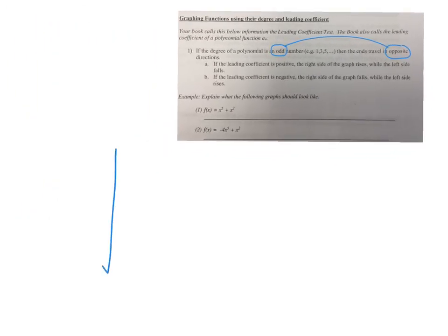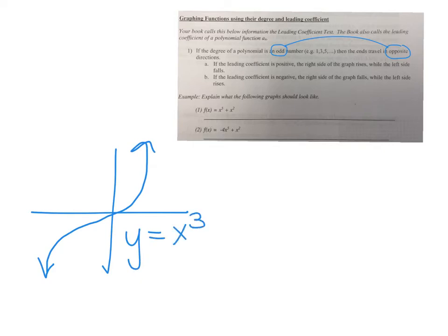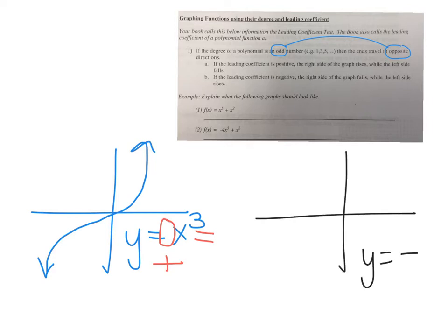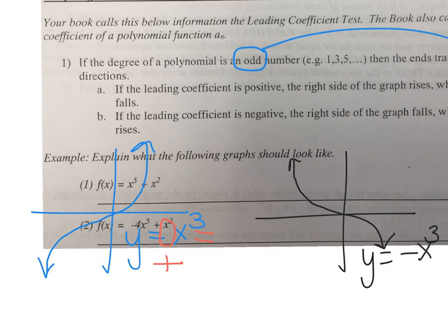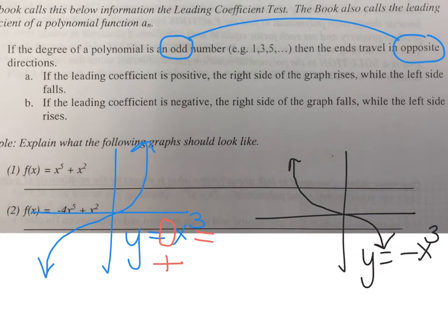Think about a cubic function like y equals x cubed. That's odd. Normally on an odd function, if the leading coefficient is positive — in this case it's 1 — the left side goes down and the right side goes up. However, if I had y equals negative x cubed, it flip-flops the ends: the left side goes up and the right side goes down. This matches what your notes say for letters A and B: positive leading coefficient means the right side rises while the left falls; negative leading coefficient means the right side falls while the left rises.